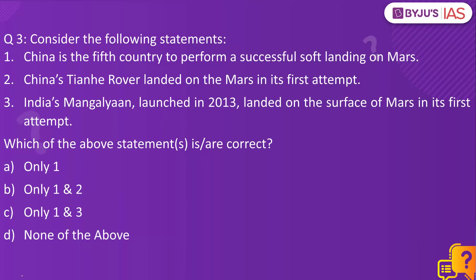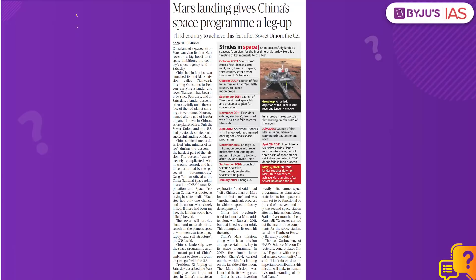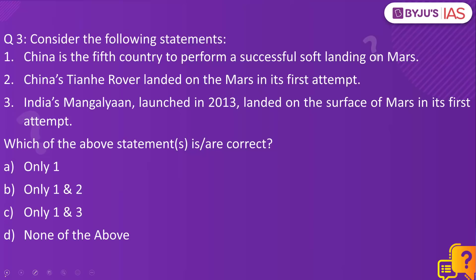Let's look at question number three. Consider the following statements. The context: Mars landing gives China's space program a leg up. Statement one: China is the fifth country to perform a successful soft landing on Mars. Statement two: China's Tianhe rover landed on Mars in its first attempt. Statement three: India's Mangalyaan, launched in 2013, landed on the surface of Mars in its first attempt. Which of the above statements is or are correct?